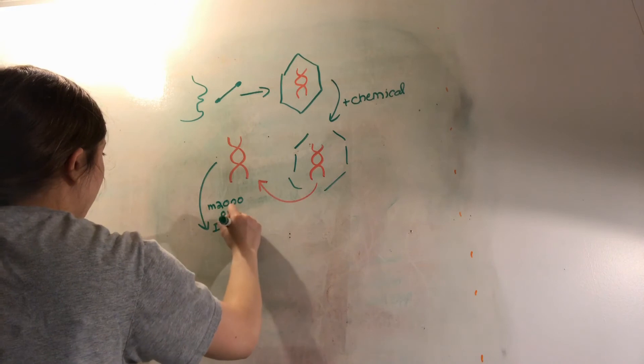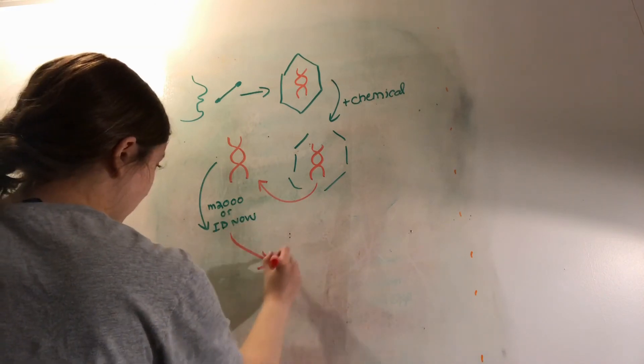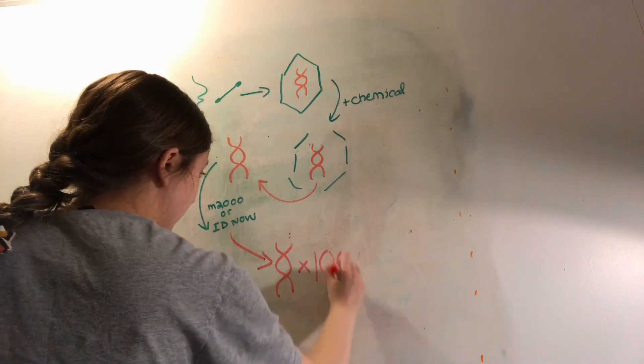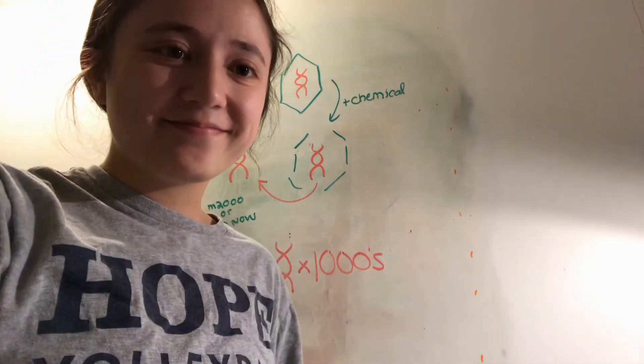Abbott uses special instruments to make copies of the DNA, allowing them to detect the virus in that specific strand and determine if the patient is positive.